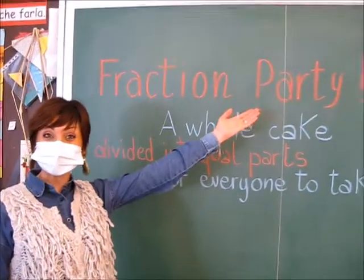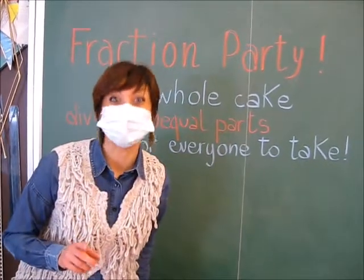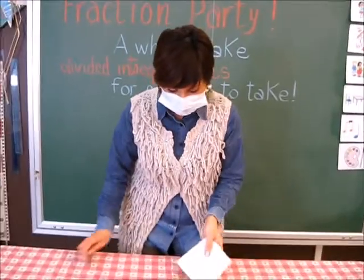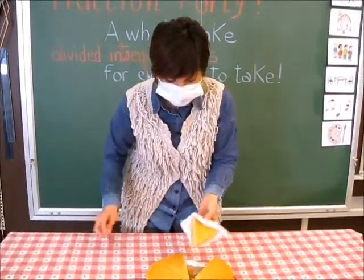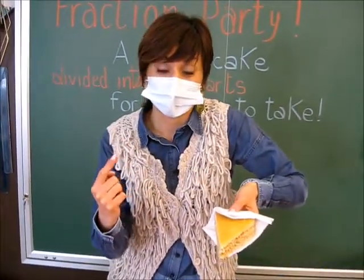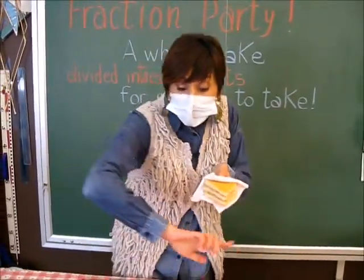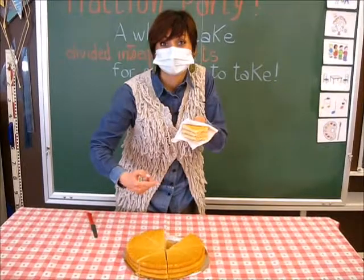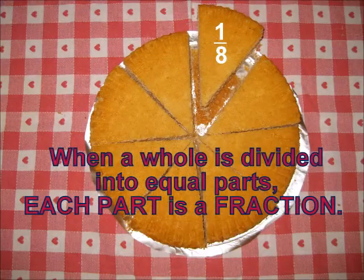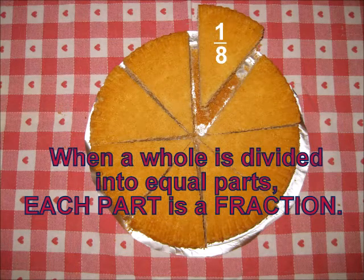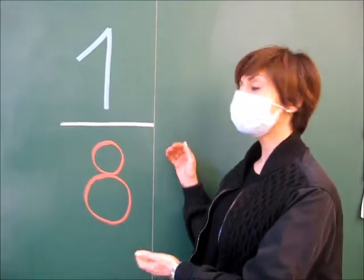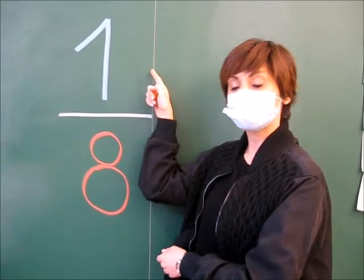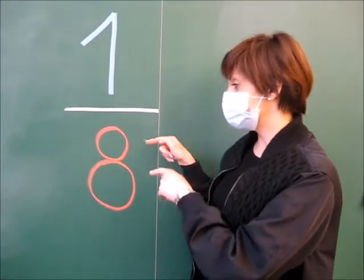Fraction party — we know what a party is, but what is a fraction? This is a fraction. One-eighth is a fraction. It is one part of a whole — one part of a whole cake. In a fraction, the top number is the numerator, and the bottom number is the denominator.